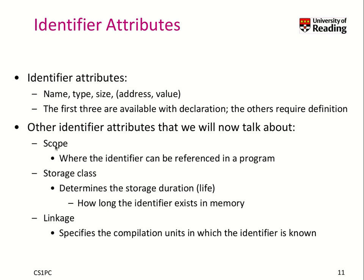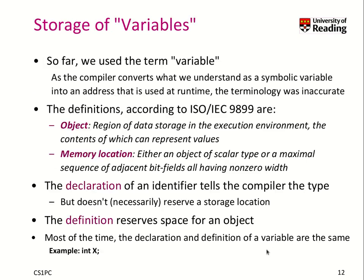There are different identifier attributes to discuss. One is the scope — that means when and where in the program you can reference an identifier that has been declared before. Then the storage class, which determines the storage duration, also called the lifetime — how long the values of an identifier exist in memory. And lastly, the linkage, which specifies how compilation units can access identifiers of other compilation units.